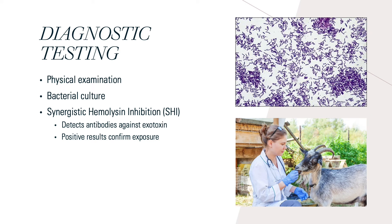If a goat is suspected to have this disease, there are diagnostic testing options available. A physical examination is first performed and if abscesses are seen or palpated, then it is highly suggestive of cheesy goat. However, bacterial culture is necessary to accurately diagnose since other bacterial strains can also cause abscesses. Another test, called a synergistic hemolysin inhibition, can detect antibodies against the exotoxin produced by the bacteria, and positive results can indicate past or recent exposure and the development or confirmation of active lesions.